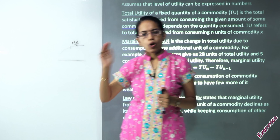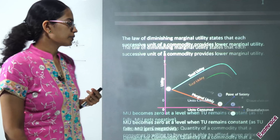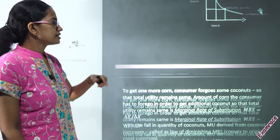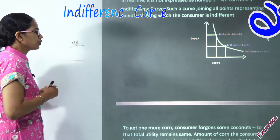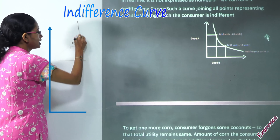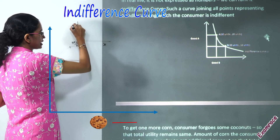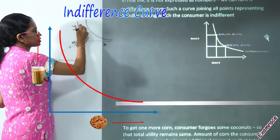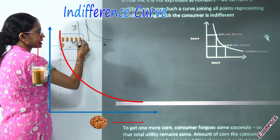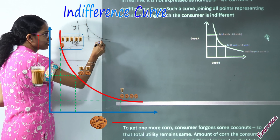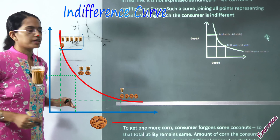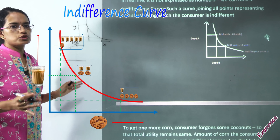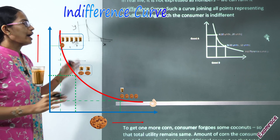Total utility and marginal utility both fall under cardinal utility. Under ordinal utility we talk about ranking and the indifference curve. The indifference curve involves two commodities, x and y. Whether you consume more of y and less of x, or less of y and more of x, you are indifferent — either combination is acceptable to you.